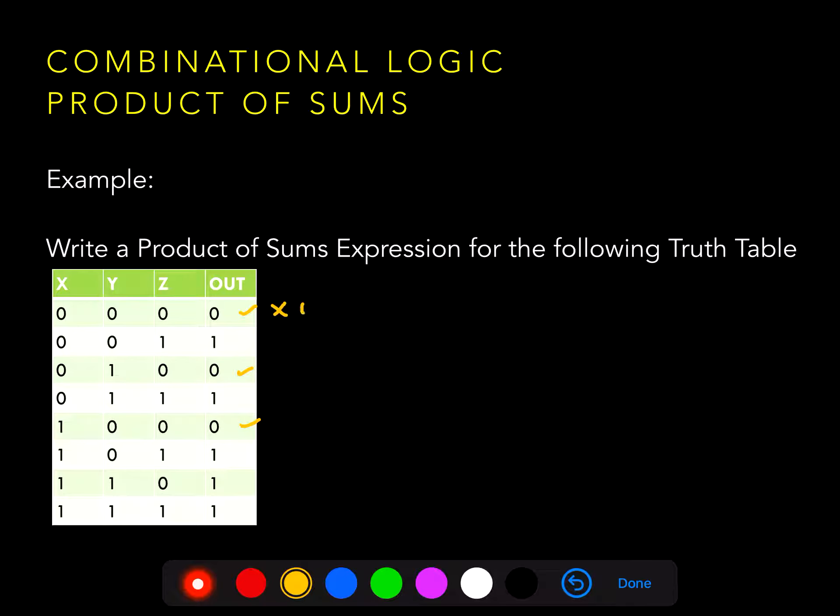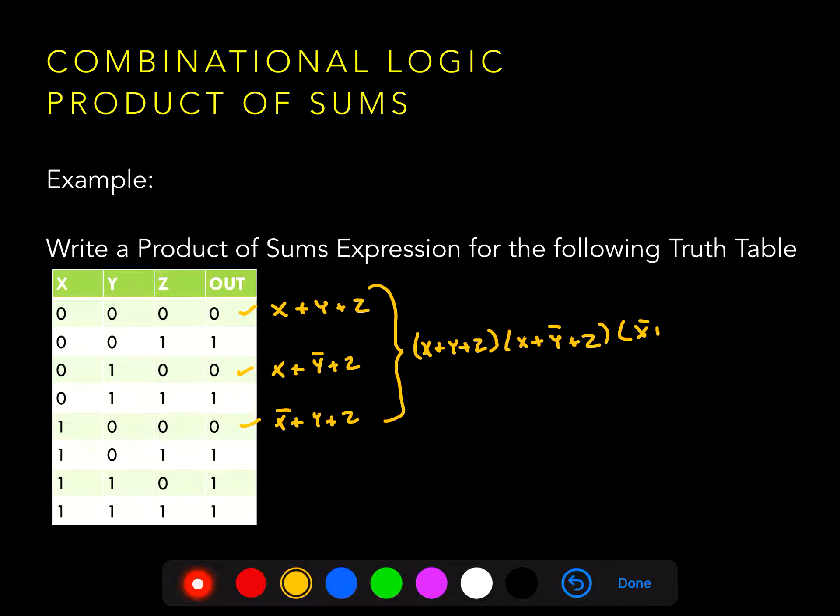This first line will simply be X or Y or Z. This next line that produces a zero will be X or Y not or Z. And this last line will produce X not or Y or Z. To come up with a complete product of sums expression, we then AND all those expressions together, X or Y or Z, ANDed with X or Y not or Z, and X not or Y or Z.